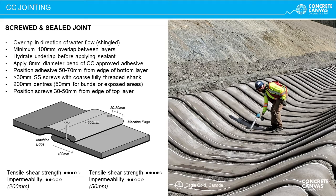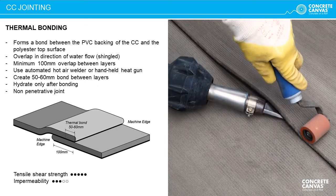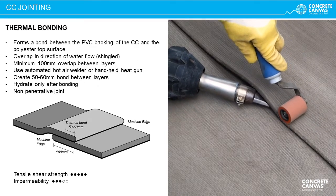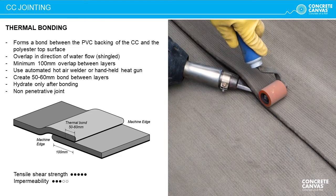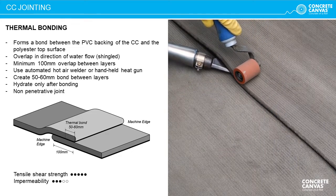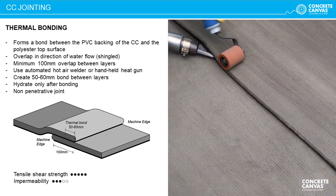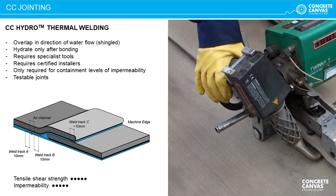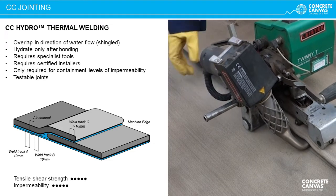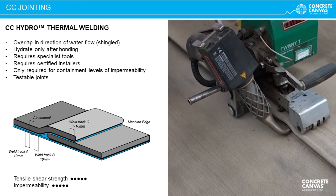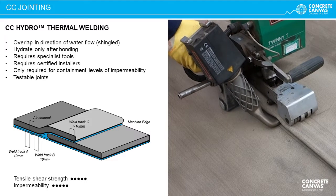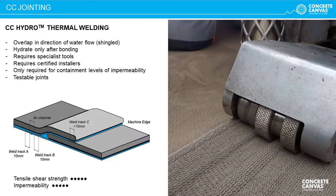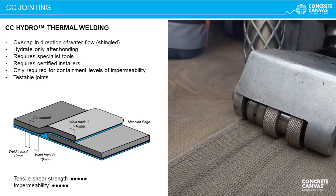This joint is not intended to provide containment levels of impermeability and should be used to mitigate ingress only. Thermal bonding of CC may be employed where it is unsuitable to use penetrative fixings, for example if the CC is providing protection to an underlying membrane. For CC Hydro installations or containment-level projects, thermal welding by trained operatives can be used to join layers, providing fully testable air pressure joints to satisfy stringent CQA requirements.